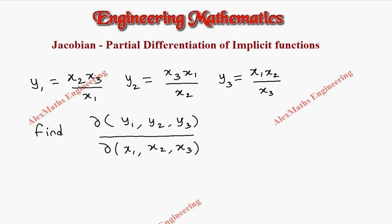Hi students, this is Alex. In this video we are going to find the partial differentiation of an implicit function using the Jacobian method, where y1 is given as x2*x3/x1, y2 is x3*x1/x2, and y3 is x1*x2/x3. We have to find ∂(y1, y2, y3)/∂(x1, x2, x3).